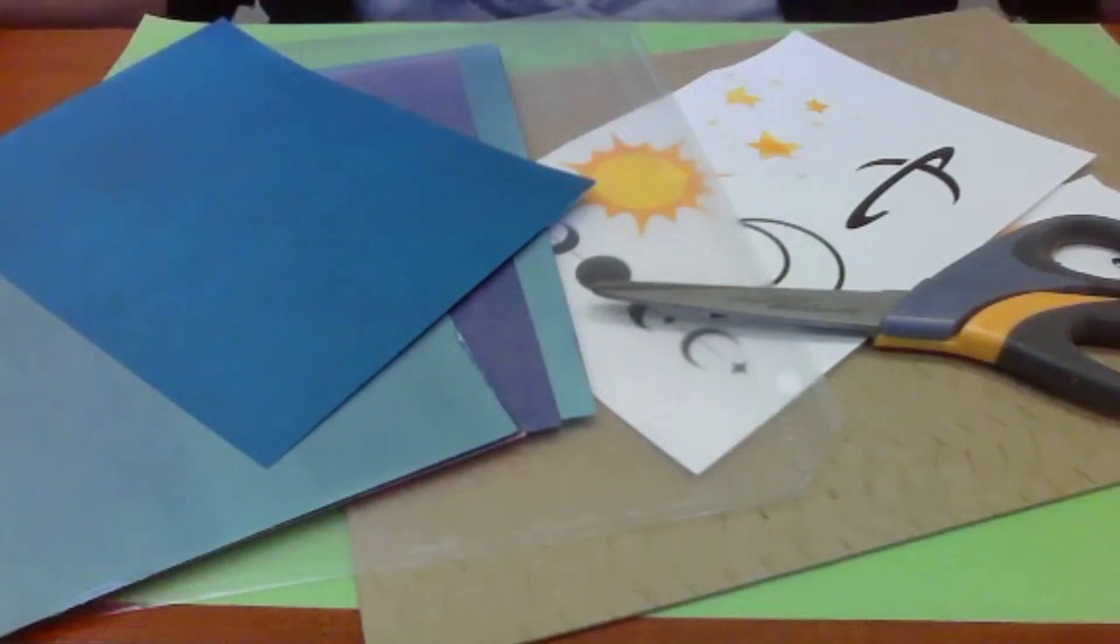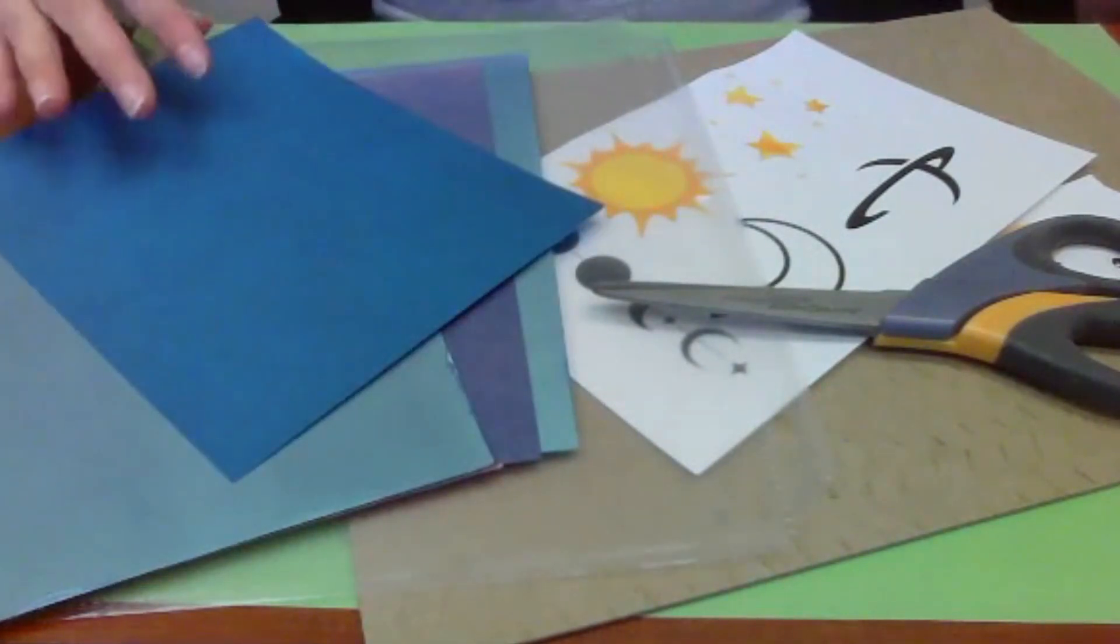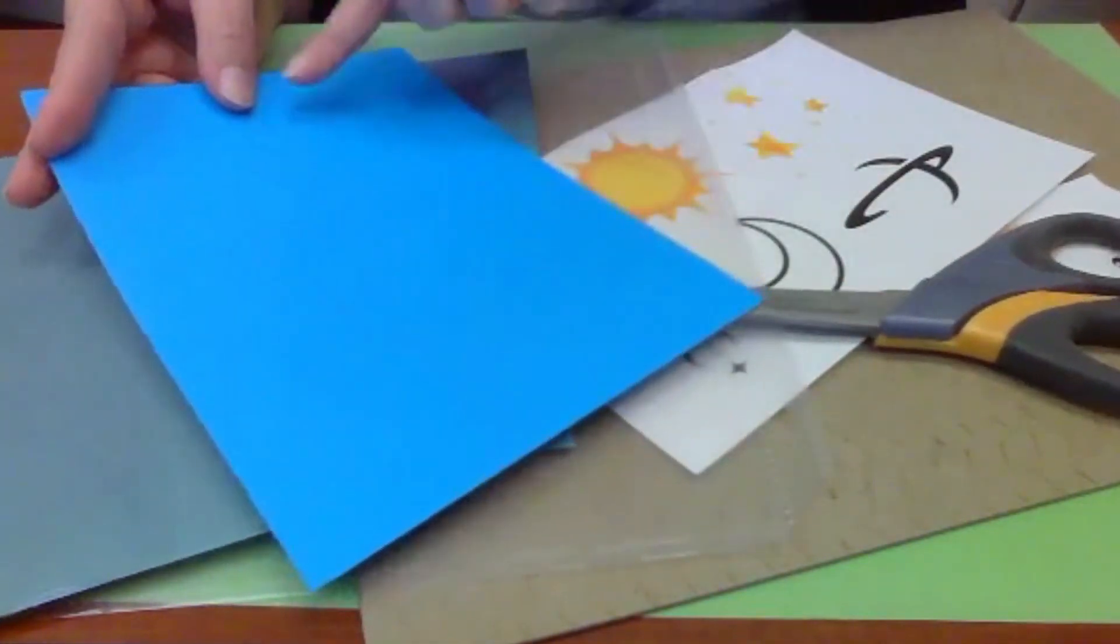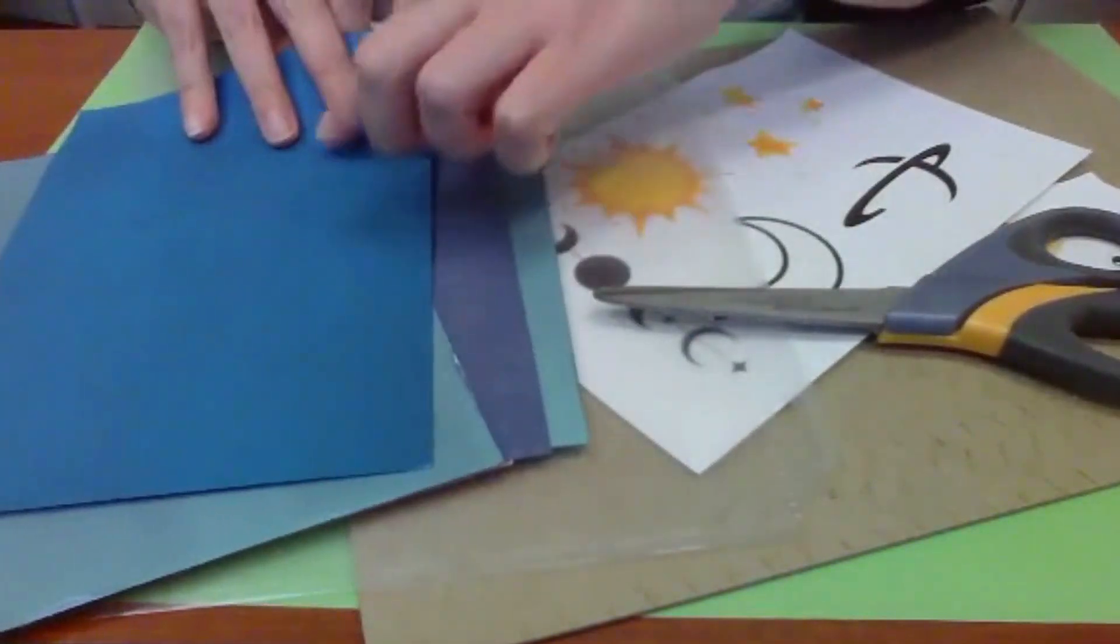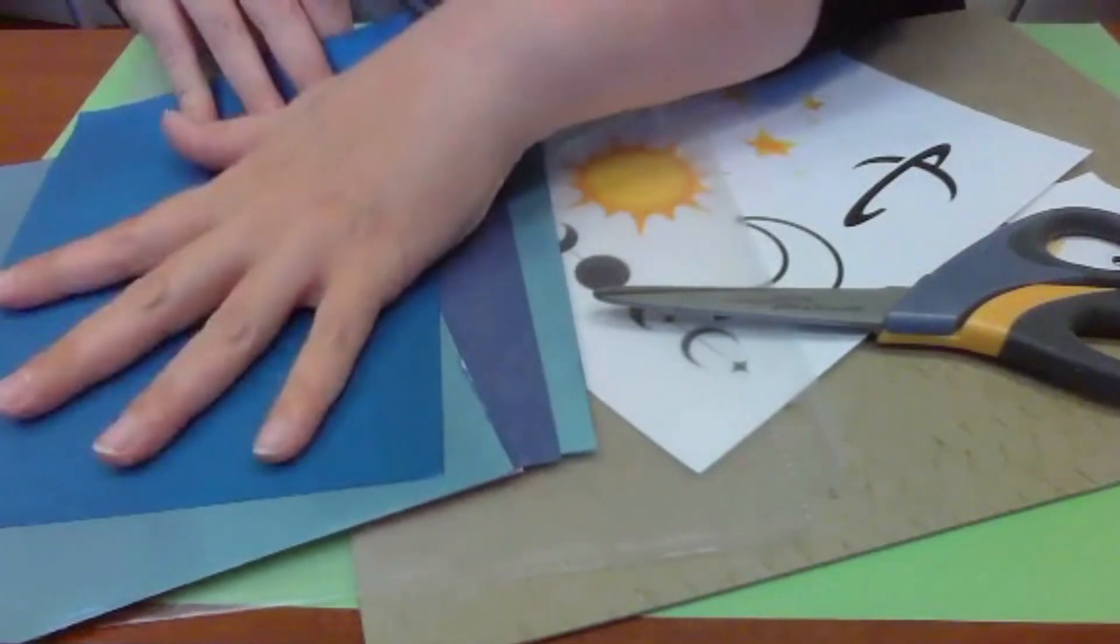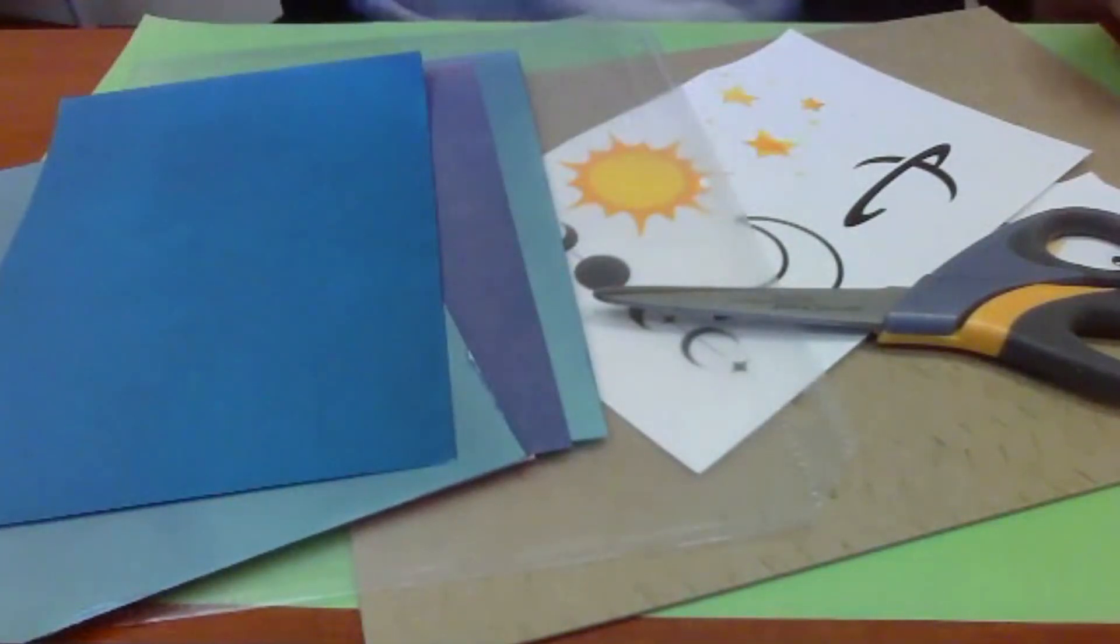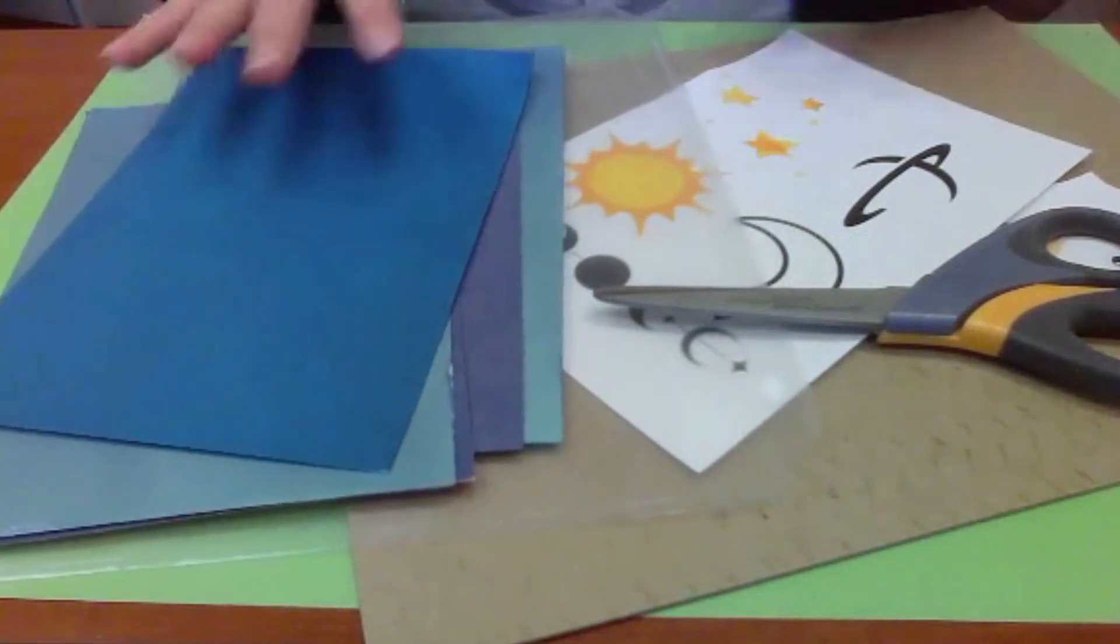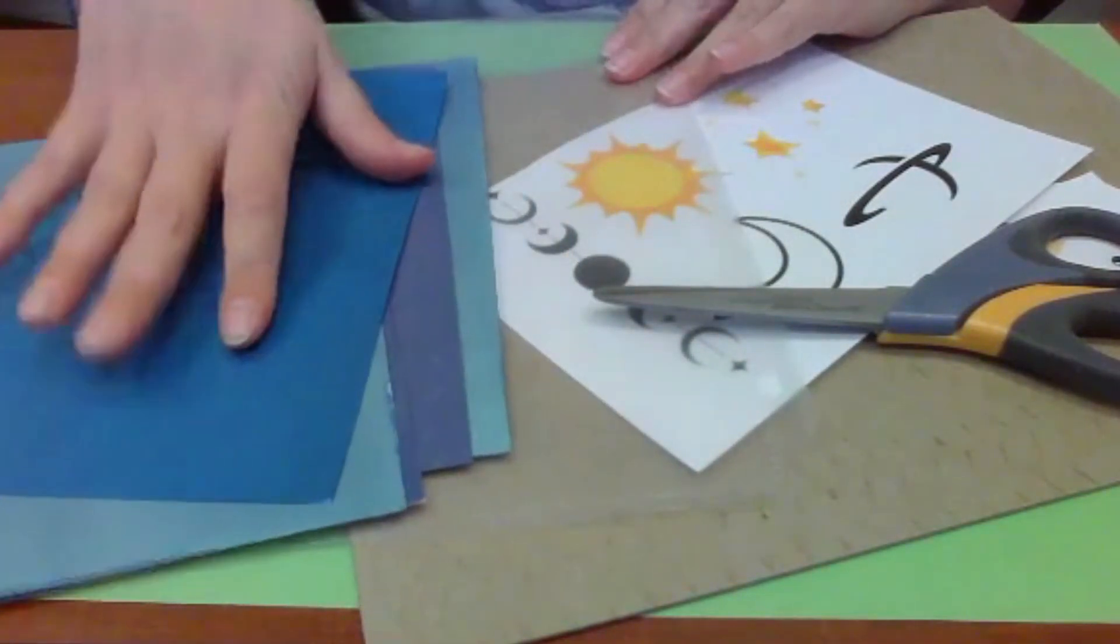So this is going to be kind of a faster craft to do and you don't need a lot of materials for it. So you're going to need sun paper and you're going to notice on your sun paper one side is dark and the other one is a bright color. The dark side is the side that the sun is going to bleach. So you want to make sure you use the correct side.